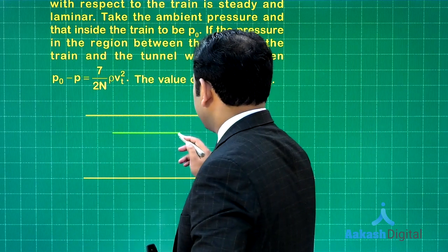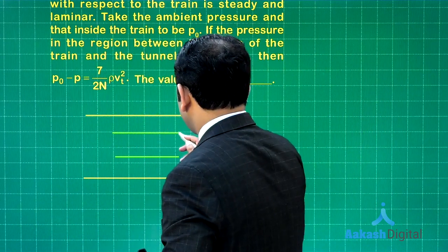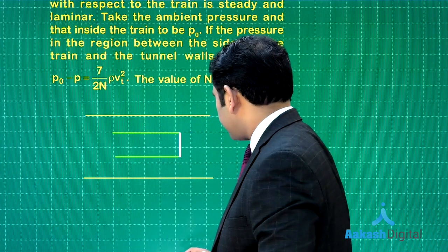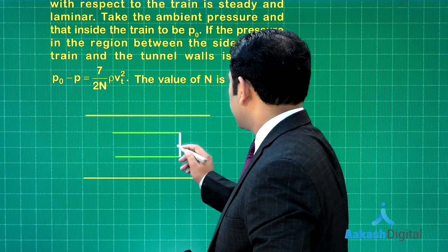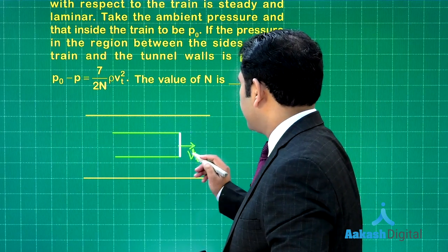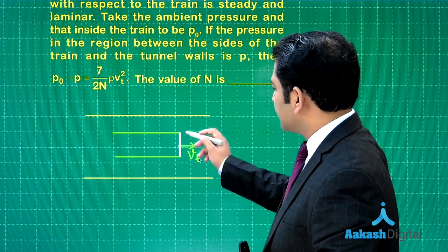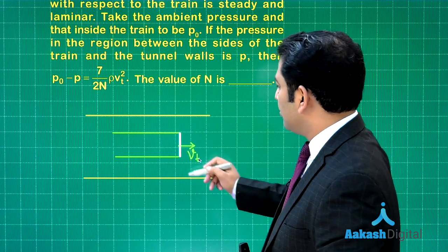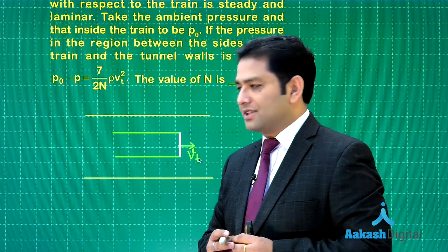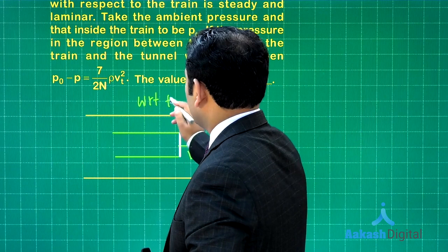p0 is the ambient pressure and p is the pressure in the zone between the train and the wall of the tunnel. We will make a schematic diagram. This is the tunnel—I'm making the top view. This is the top view of the train.